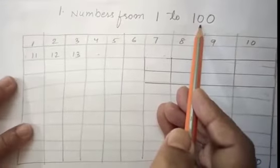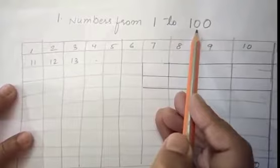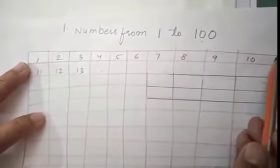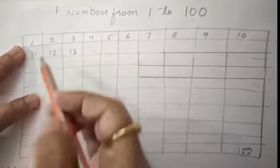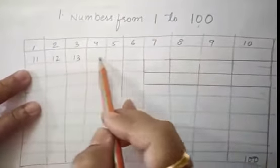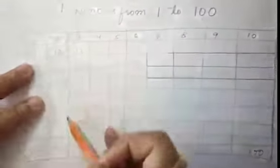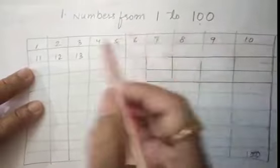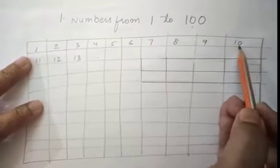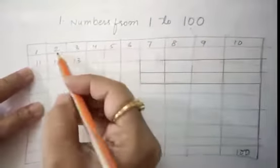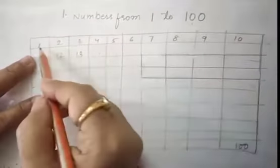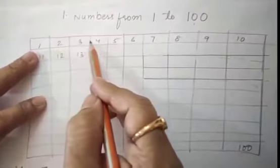Numbers from 1 to 100. As you have learnt already in 1st standard, 1 to 100, you know very well. You can draw one rectangular box, very big box and then you can draw some horizontal lines and then some vertical lines. How many lines should be there? 1, 2, 3, 4, 5, 6, 7, 8, 9, 10. 10 lines horizontally and 10 lines vertically you have to draw.